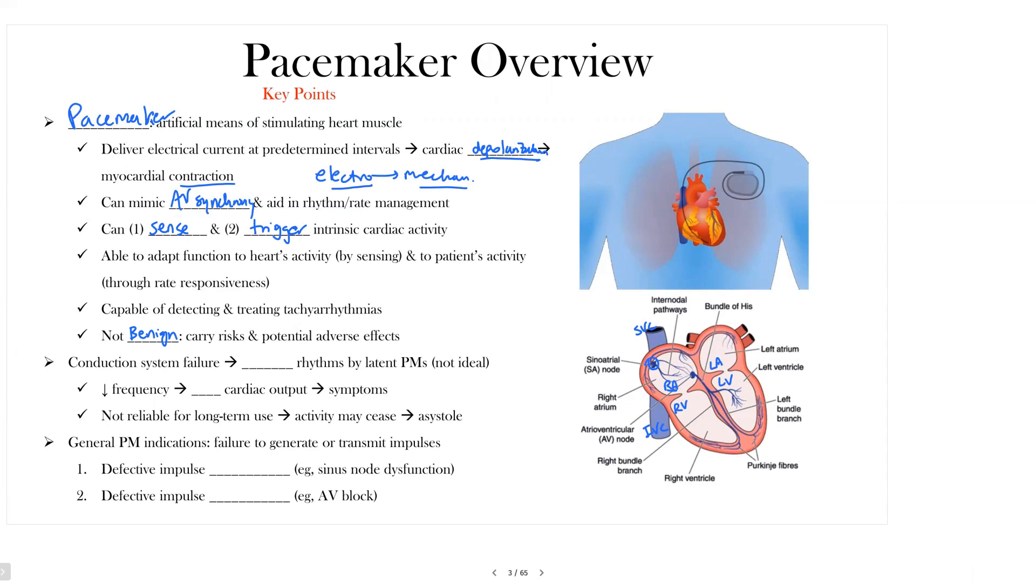They carry risk and the potential for adverse effects, infection, and a lot of other issues that we'll learn about at another point. Now, the other things we want to keep in mind is that conduction system failures can result in escape rhythms. When we talk about escape rhythms coming from those latent pacemakers, these are certainly not ideal. And as a result, there's those two shortcomings we mentioned: they have a decreased frequency that can result in a decreased cardiac output, and a lower cardiac output can result in symptoms. These are not reliable for long-term use because their activity may cease, that is, the latent pacemakers, and result in asystole.